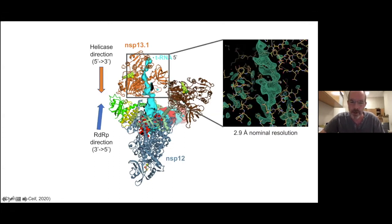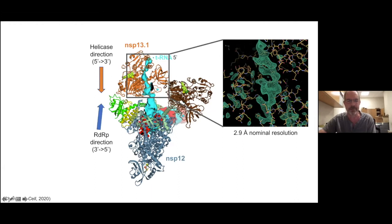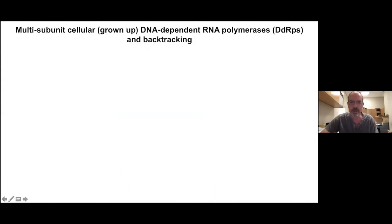One of the reviewers for our paper didn't really believe that this was the RNA. But now that we've collected a much larger data set, the overall resolution of the whole structure is 2.9 instead of 3.5. And now that we have a lot more particles, we can classify different conformations of the helicase. We have one structural class where we can very clearly see the RNA going through the active site of the helicase. So this is definitely the five-prime end of the template. So what does that mean — the helicase and the polymerase are bound to the same strand of RNA and going in opposite directions?